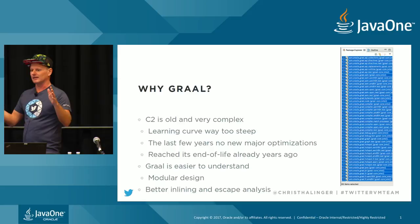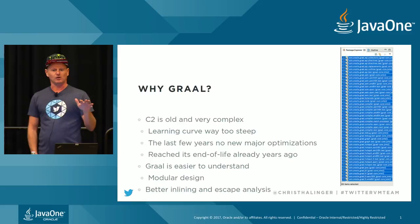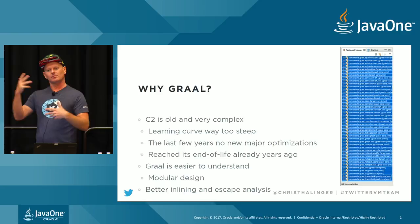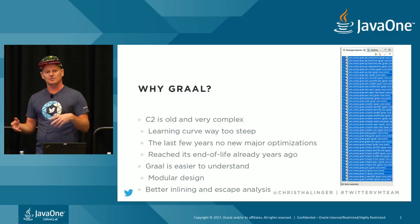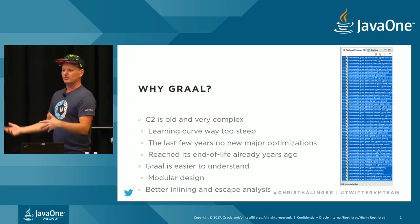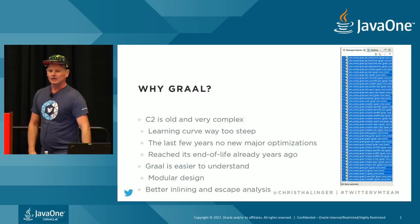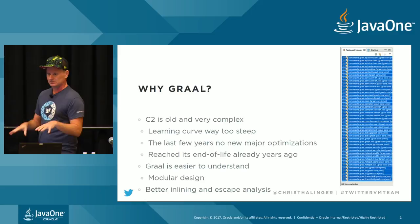In my opinion, C2 reached its end of life already a couple of years ago. And I think that Graal is much easier to understand — it has a modular design with dependencies between modules, and the build system ensures you're not breaking or introducing circular dependencies. There are modules that are platform-independent and can't depend on platform-dependent modules. It has a really nice design. Very importantly, the inlining is much better, and the escape analysis too — that's where we mostly gain, as you'll see later.